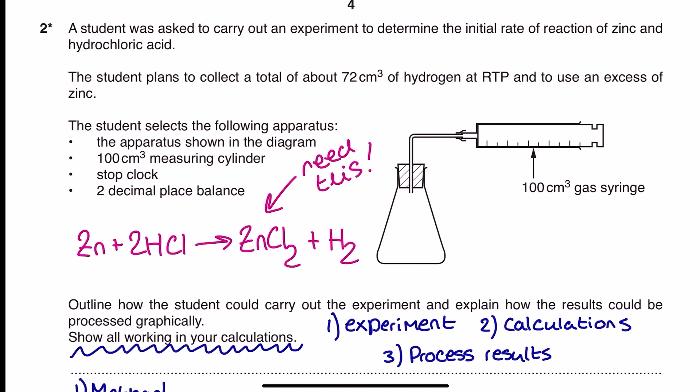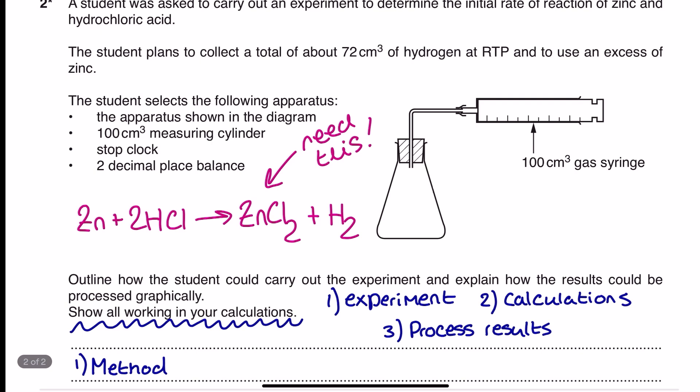So what I'm going to do, as you can see at the bottom just here, is I'm going to take you through my response here in three different parts. We're going to have a look at the method for the experiment. We're going to look at some calculations, because we have been told to show all the working in our calculations, so there's got to be some calculations involved. And then following the final instruction for this question, I'm going to describe how I would process my results graphically.